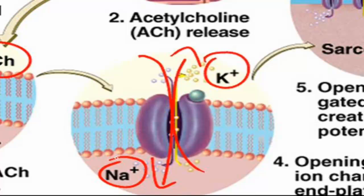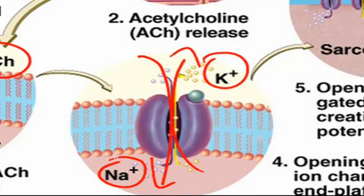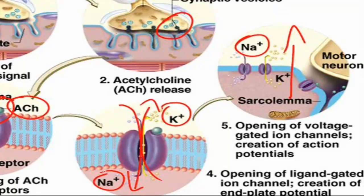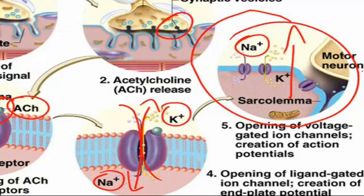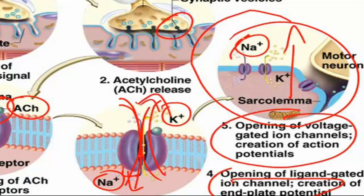We'll call that graded potential the end plate potential. If this end plate potential is large enough, it's going to stimulate the opening of voltage-gated ion channels in the sarcolemma of the muscle cell — the sarcolemma being the membrane of a muscle cell. If that happens, then we have what's called a muscle action potential. That muscle action potential will travel along the sarcolemma like tipping dominoes throughout the entire muscle cell, as depicted in number five here.